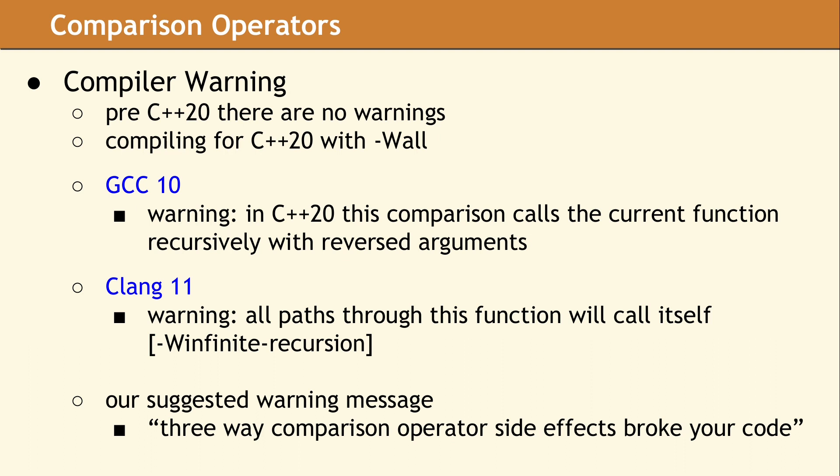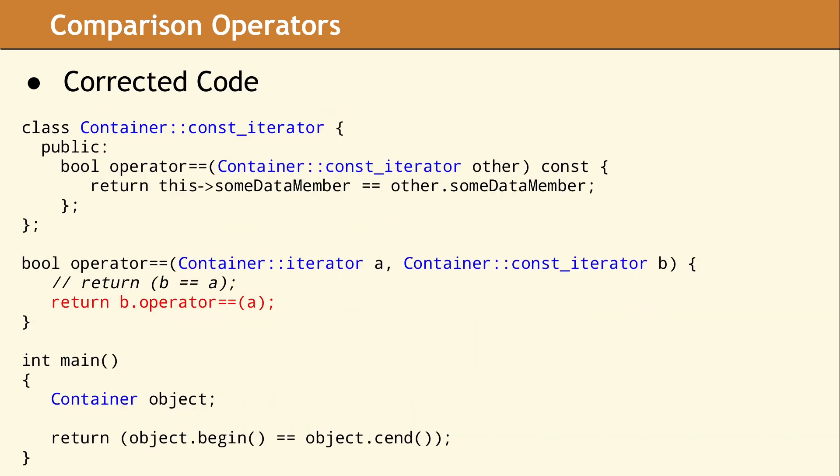So what did we find? When they added the three-way comparison operator, they also changed the way all existing comparison operators work. One of the most significant changes is the compiler can swap the arguments of a comparison to find a better match. As we mentioned, the implementation of our free function comparison operator was supposed to call the class method. The compiler decided to swap the arguments again, since it decided calling the free function was a better match. The result was, calling the free function meant it would simply call itself and lead to an infinite recursion.